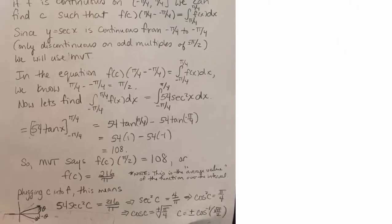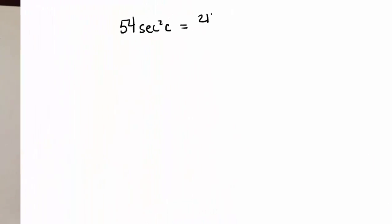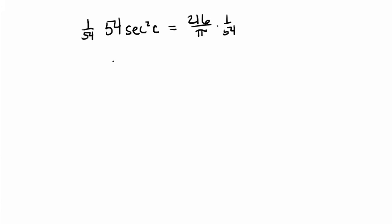So we had 54 secant squared c equals 216 over pi. Well, the first thing that we want to do is get the trigonometric function by itself. So I'm going to multiply both sides by a 54th. We are going to be left with secant squared of c is equal to 4 over pi.